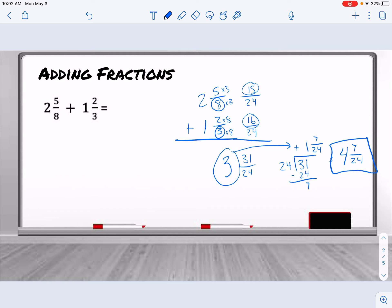So we're going to get our answer of 4 and 7 twenty-fourths. And so remember, when adding fractions, we find a common denominator, add the numerators, and then regroup if needed.